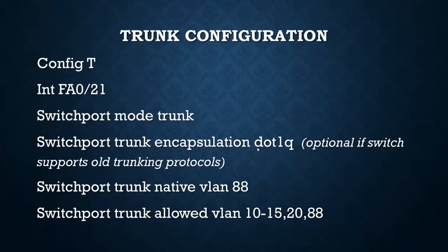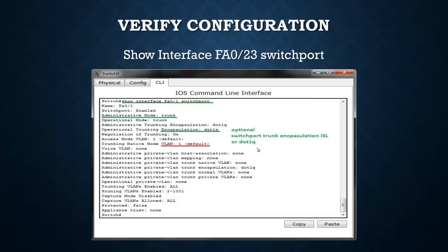Once you've made your VLANs and trunks and everything's set, to verify your configuration use 'show interface fa0/23 switchport.' You can see what mode it's in - access or trunk - what encapsulation it has, what VLAN it's assigned, what the default VLAN is, and things like that.